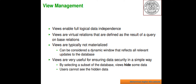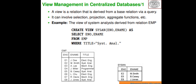Here is an example of view management in a centralized database. A view in a relation is derived from a base relation via a query; it can involve selection, projection, aggregate functions, etc. The view of a system analyst (sysxan) derived from the relation EMP can be defined by the following SQL query: CREATE VIEW syscon (eno, name) AS SELECT eno, name FROM emp WHERE title = 'sysanl'.